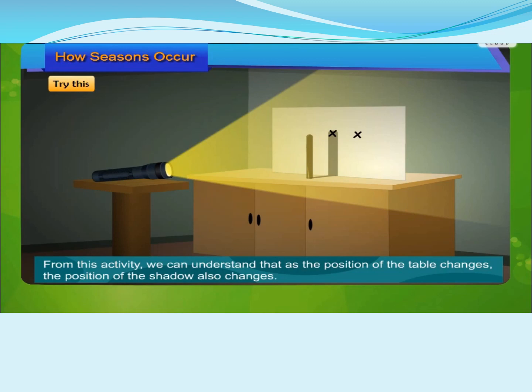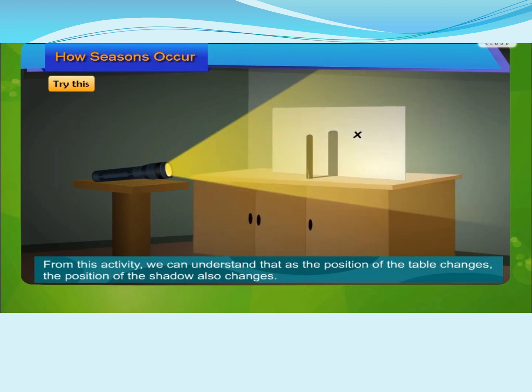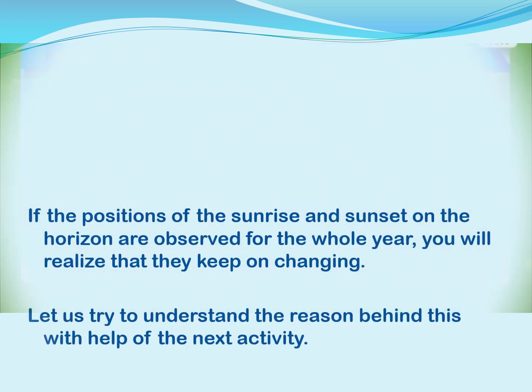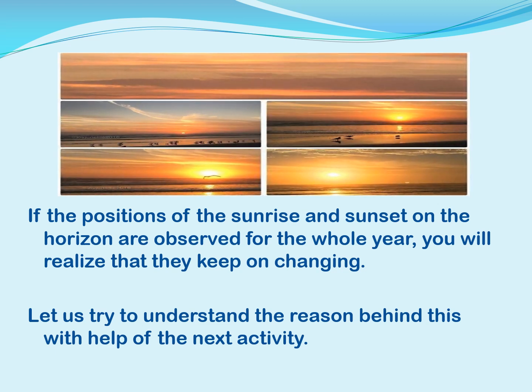Observe and mark the position of the shadow that falls on the paper. Note the change in the location of the shadow. From this activity, we can understand that as the position of the table changes, the position of the shadow also changes. If the positions of the sunrise and sunset on the horizon are observed for the whole year, you will realize that they keep on changing. Let us try to understand the reason behind this with the help of the next activity.